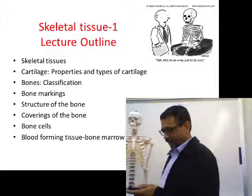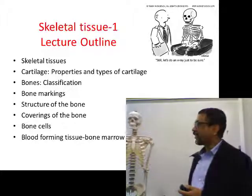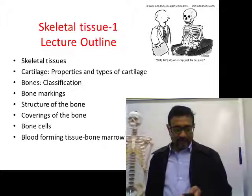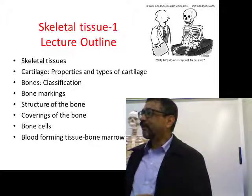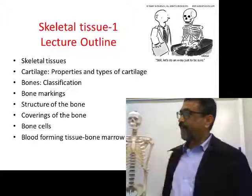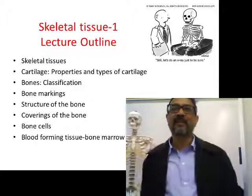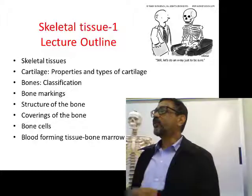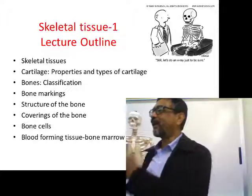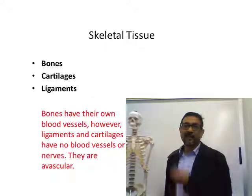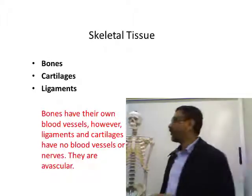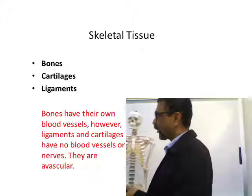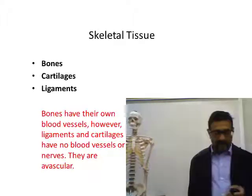Skeletal tissue structures include bones, cartilages, and ligaments. The key difference is that bones are vascular — that means bones have blood vessels. Through the central canal of the osteon, blood vessels pass. Bones also have nerves. But other structures like cartilages and ligaments are avascular — no blood vessels or nerves.